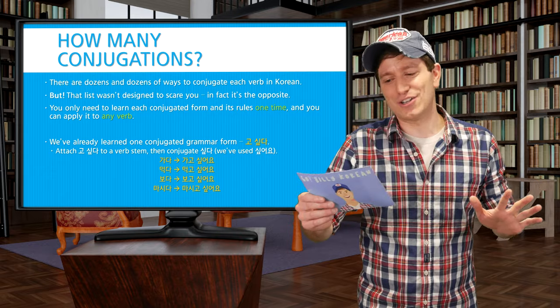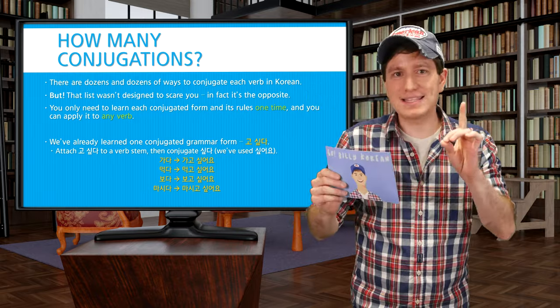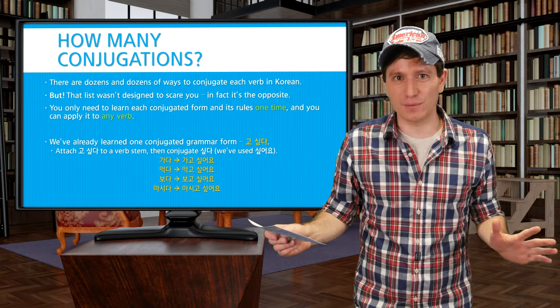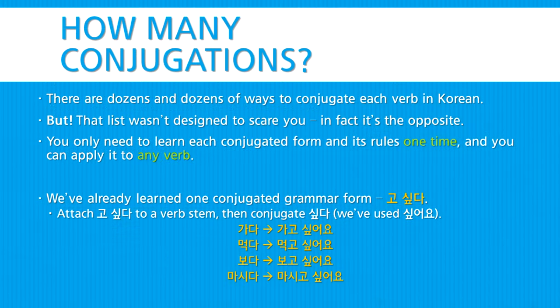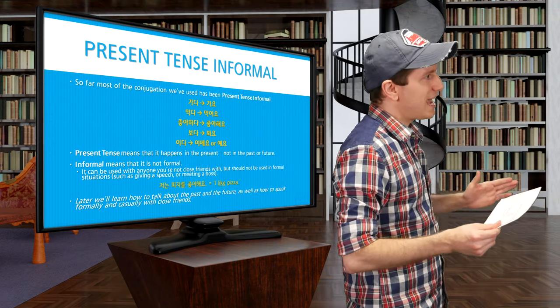But don't let that list scare you. You only need to learn each form once, and you can apply it to every verb, which is really nice. We've actually already learned one conjugated grammar form: 고 싶다, which involves attaching 고 싶다 to a verb stem and conjugating 싶다 as 싶어요. So 가다 becomes 가고 싶어요, 먹고 싶어요, 보고 싶어요, 마시고 싶어요, like that. This form we've used is known as present tense informal.